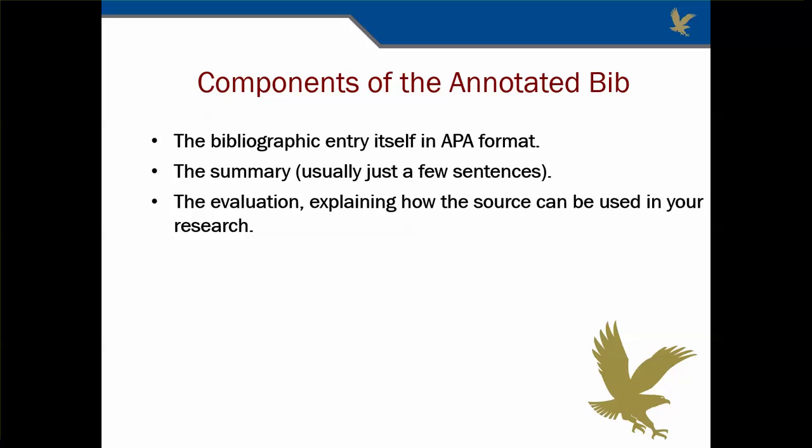The annotated bibliography itself will have three main components. First, the entry itself, which must be in APA format. Second, a short summary of the article or source in one to three sentences. And third, an evaluation of the credibility, reliability, and possible biases of your source. Make sure you also address whether you believe that the source can be used in your paper. It is okay if you don't think it's useful — just say why.